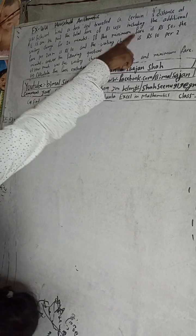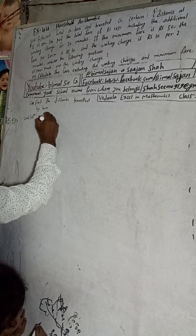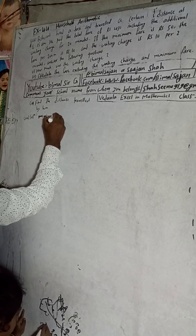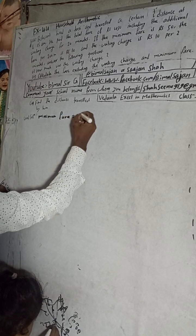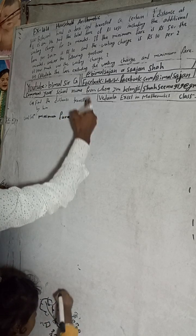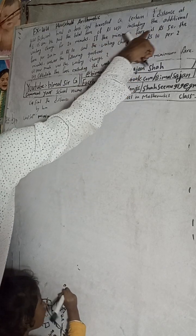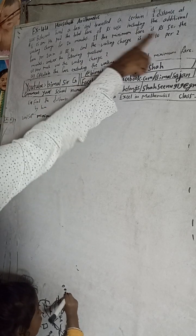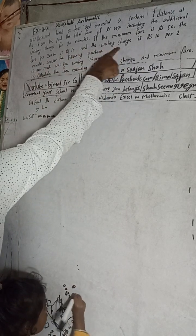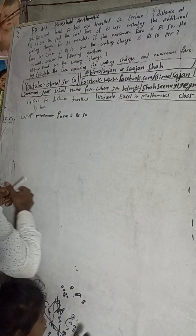So here, the minimum fare or minimum charge is equal to Rs 50. The fare for 200 meters is Rs 10. And the waiting charge for 2 minutes is Rs 10.